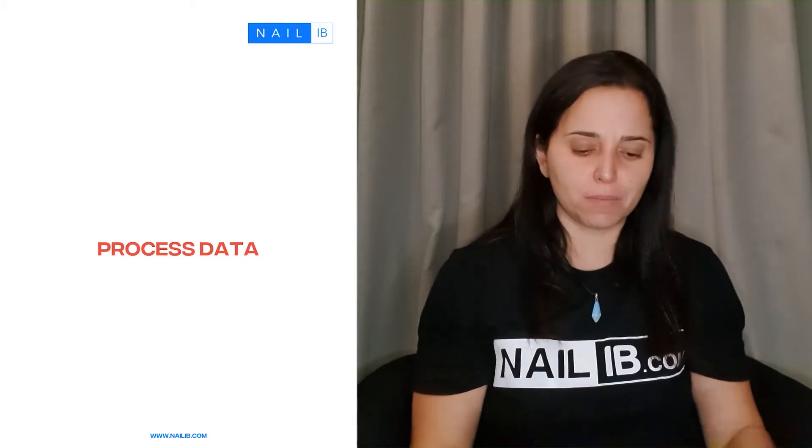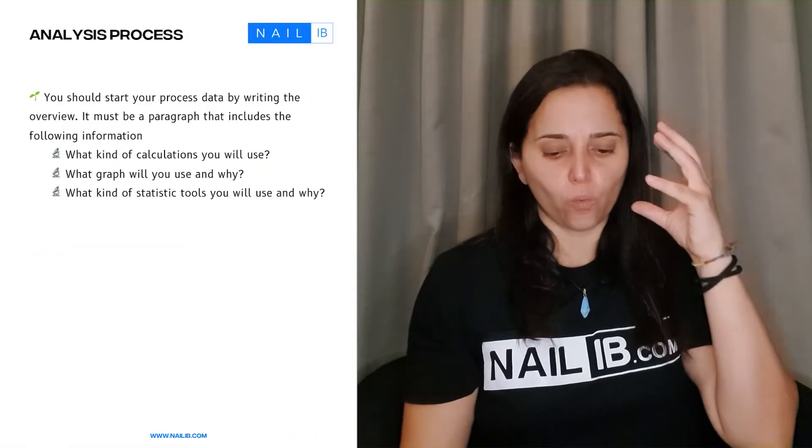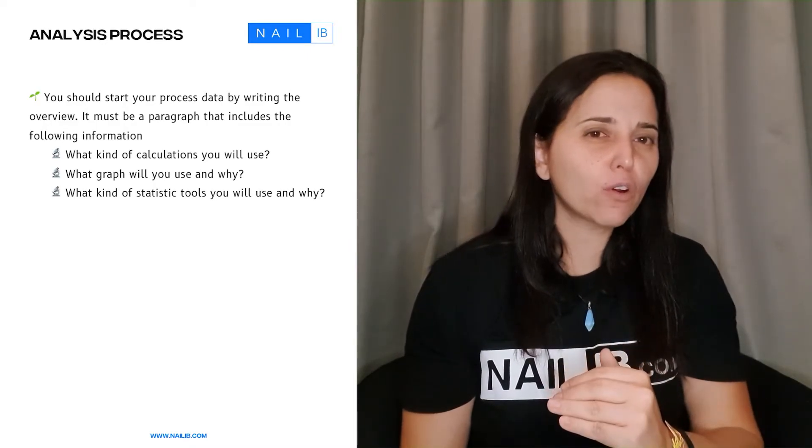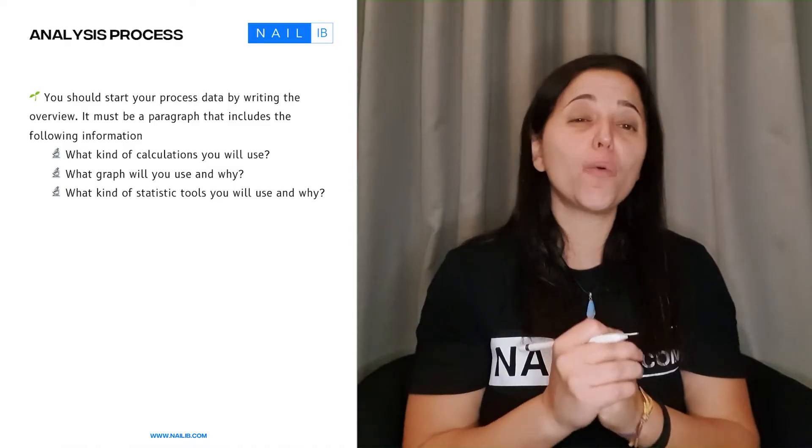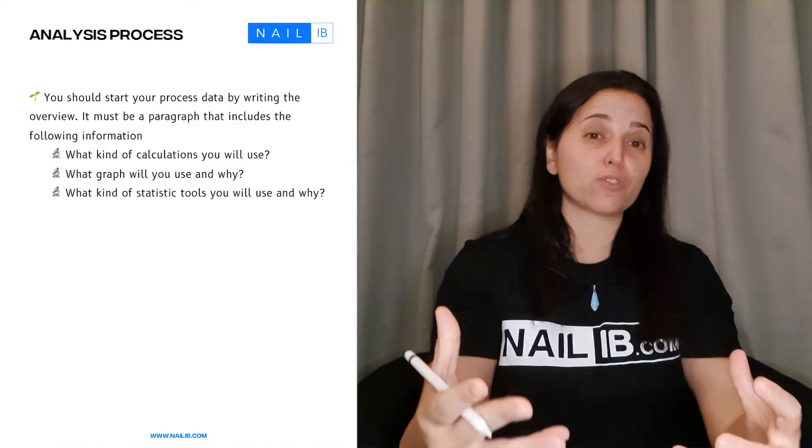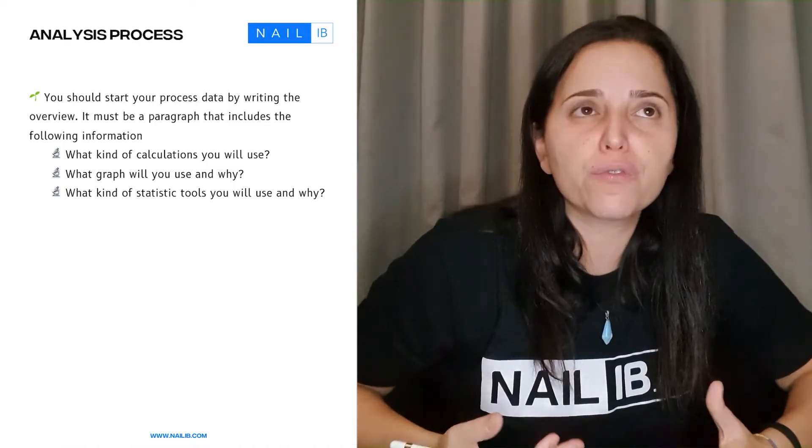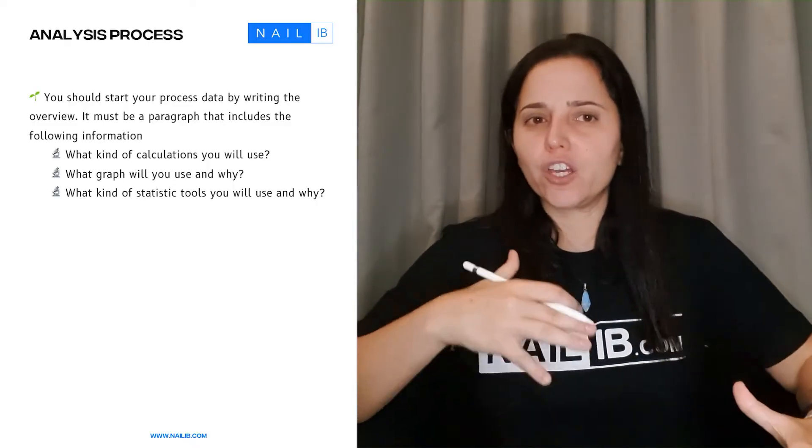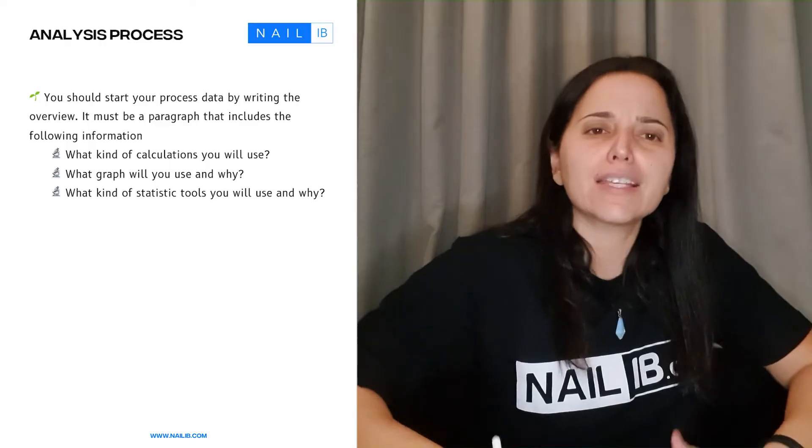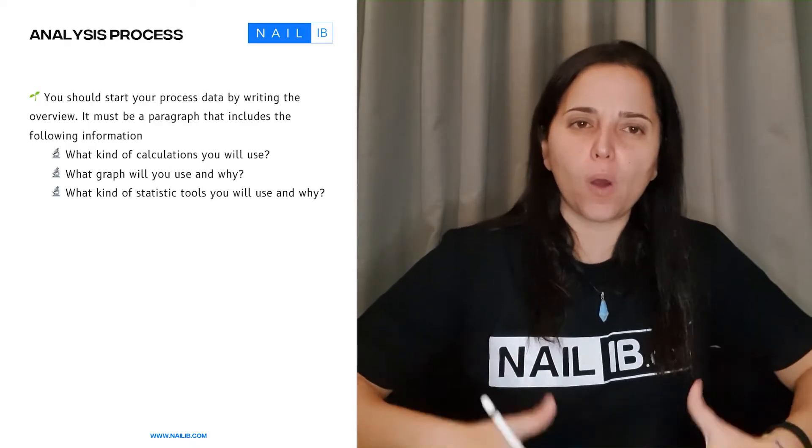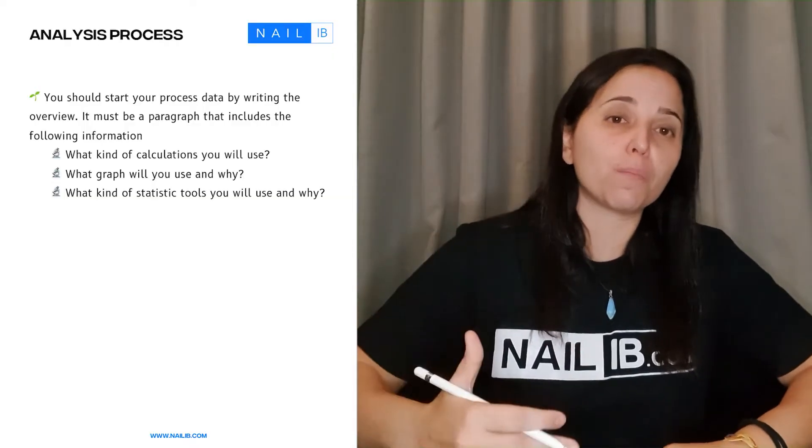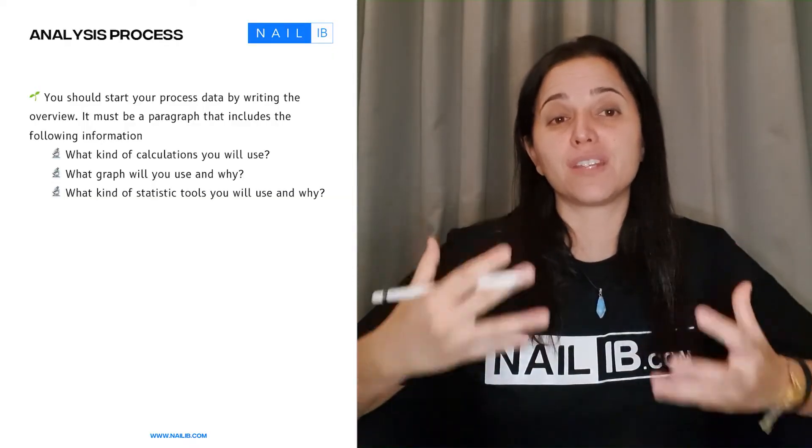So let's look at some examples. Where do you start with the process data? The overview. Do you really need to have the overview? No we don't, but it's always helpful for the IB examiner such as me that we go over the overview and say, okay, I see why you're going to use this calculation, why you're going to use that graph. It's like you give an introduction about what the whole process data will be about.